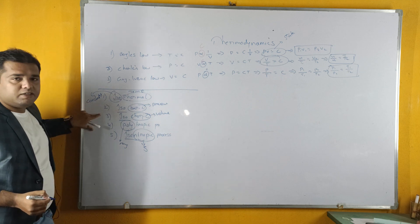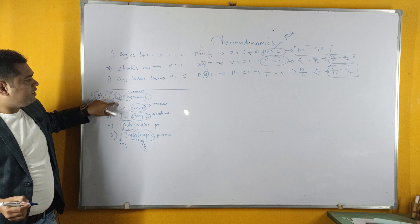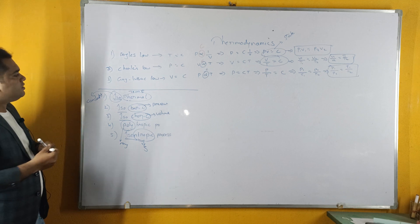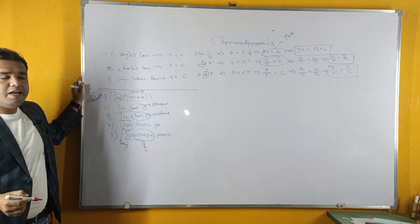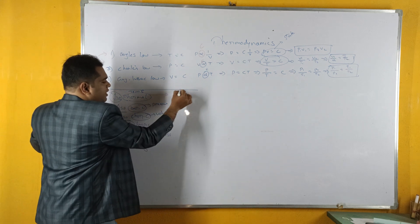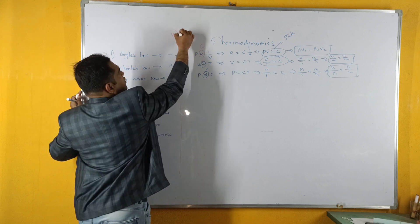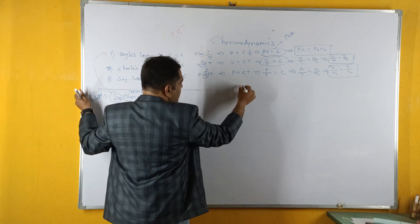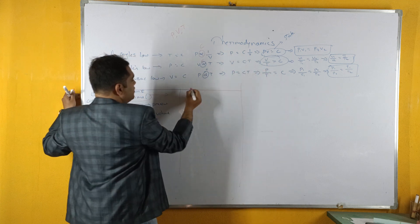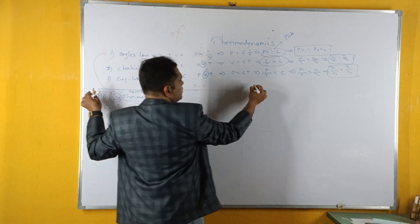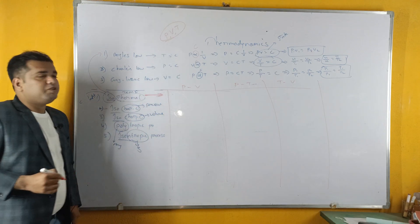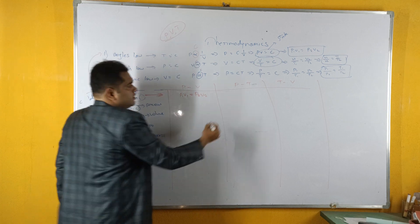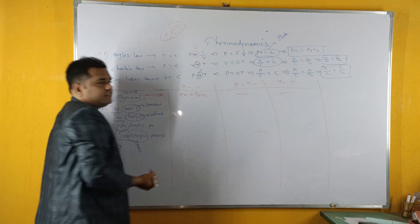Now we relate these three laws to our processes. For the isothermal process — constant temperature — Boyle's law applies. The relation between pressure and volume is P1V1 equals P2V2. As the temperature is constant, there is no relation between temperature and volume. For the isobaric process — constant pressure — Charles' law applies. The relation between volume and temperature is V1/V2 equals T1/T2. There is no relation between pressure and volume or pressure and temperature because pressure is constant.